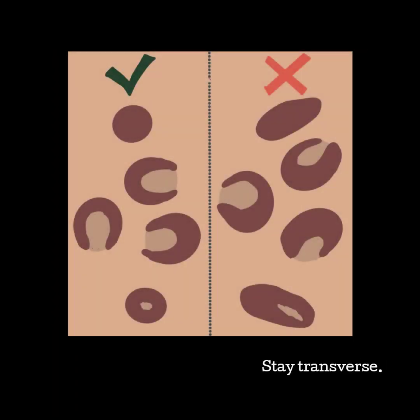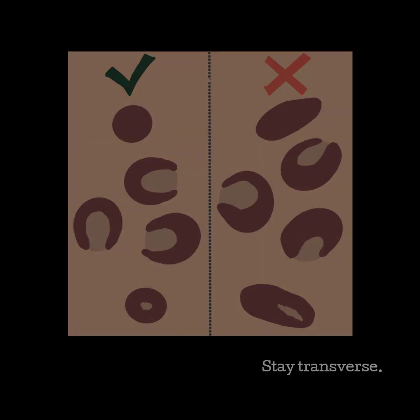Lastly, remember that the kidneys sit at a slight angle in the body. So when a lot of people turn transverse, they just image straight down, forgetting to follow the angle of the kidney. If you do not follow the angle of the kidney, you will start to become oblique on the kidney, changing the appearance. Make sure to keep the poles rounded and watch for your mid portion to have even amounts of kidney around the hilum.